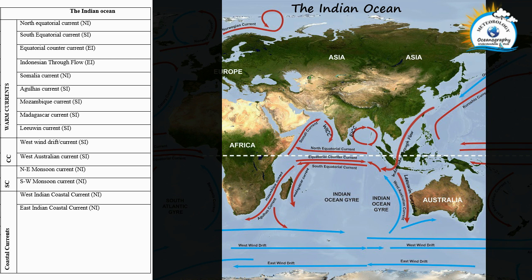The Northeast and Southwest Monsoon currents are seasonal currents — they are only observable during their respective seasons. Also present are the West Indian Coastal Current (WICC) and the East Indian Coastal Current (EICC). These are coastal currents — the WICC flows along the west coast of India, and the EICC flows along the east coast of India, which is why they are named accordingly.